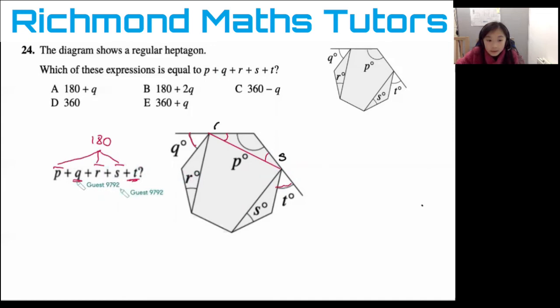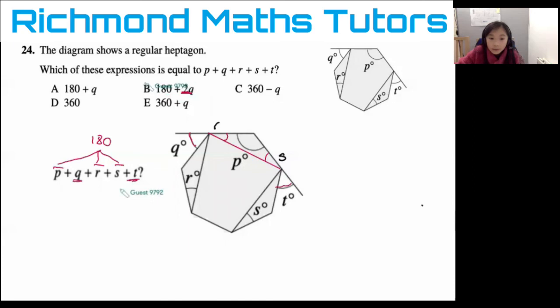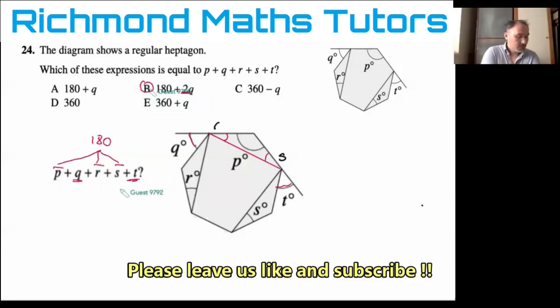Which means what's left is Q and T, and they're exactly the same. So it's 2Q or 2T. In this case, 2Q. Which means it will be 180 plus 2Q, which is B.